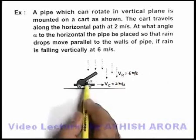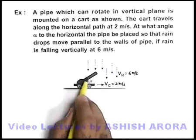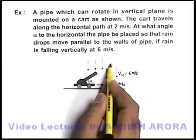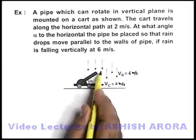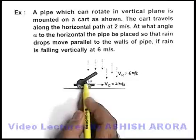In this situation we are required to find the angle alpha at which this pipe should be held so that rain enters parallel to the walls of this pipe.